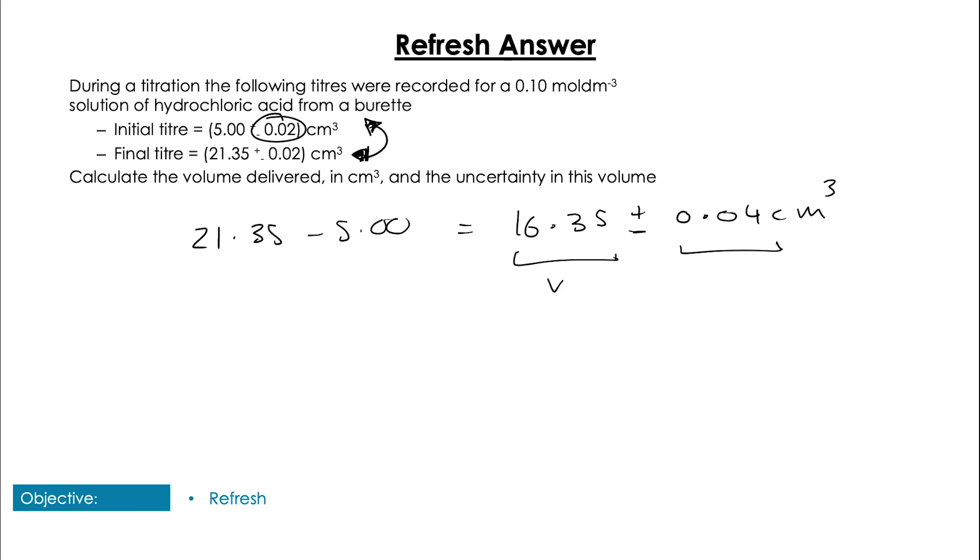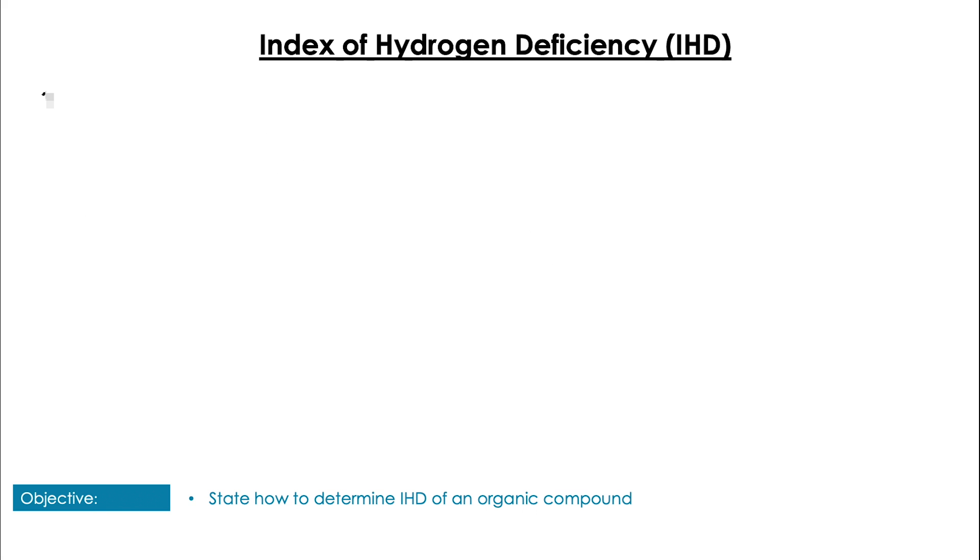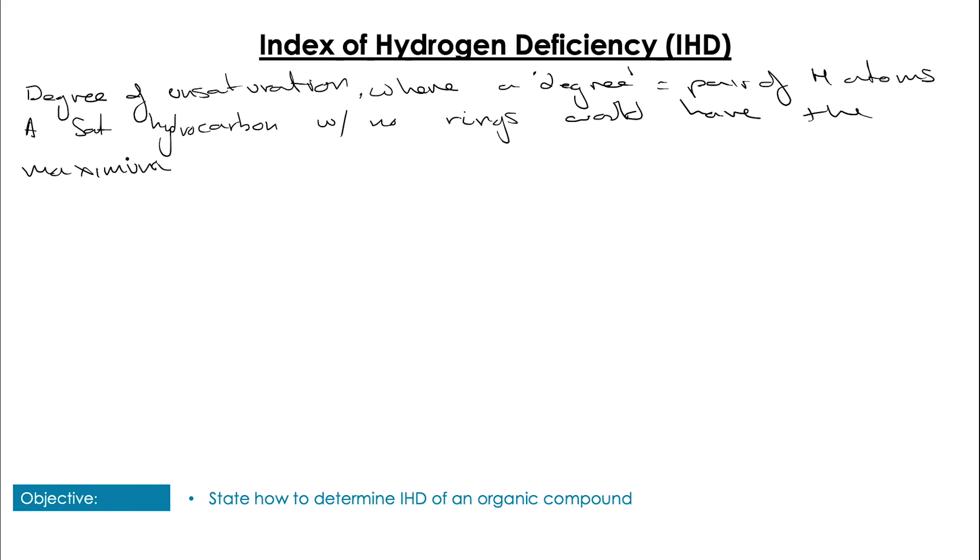So on with index of hydrogen deficiency. Really what this amounts to is a measurement of how unsaturated a compound is, the degree of unsaturation, where a pair of hydrogen atoms missing is equivalent to one degree of unsaturation.